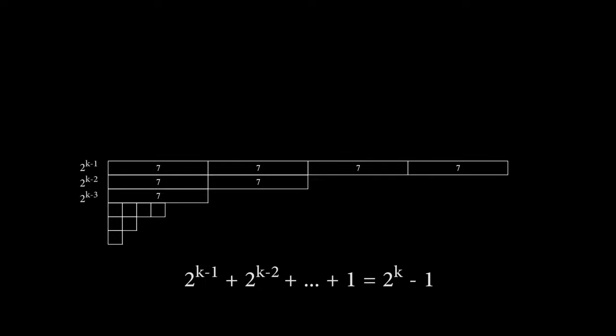Notice what this means. Each one of our big blocks holds a value of 2 to the k minus 1, and we just discovered that all of our little blocks add up to 2 to the k minus 1.